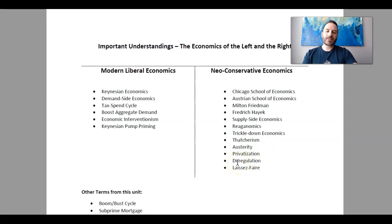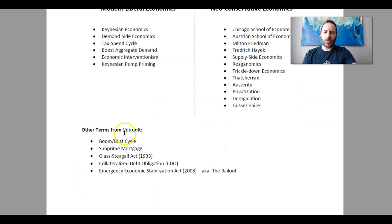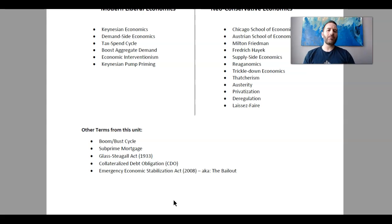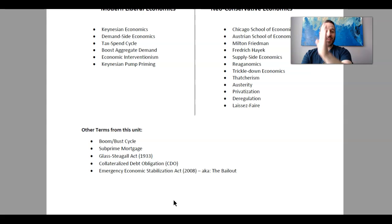Laissez-faire, of course — we should know this at this point in the course. It means hands off, let it be, leave it alone. That is very much a capitalist ideal. Boom-bust cycle: every 7 to 10 years we have periods of boom and bust in the economy. There are numerous reasons as to why that happens. The economy just has periods of yay and oh no, over and over again, every 7 to 10 years or so.